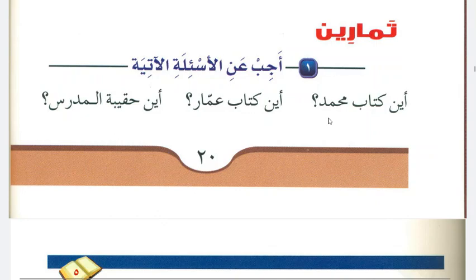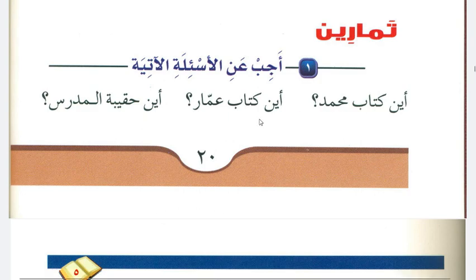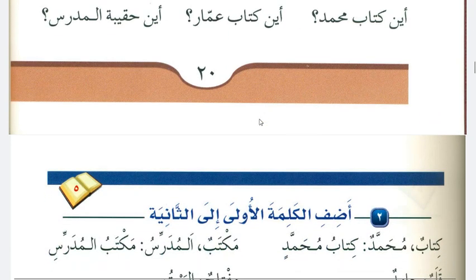For example: أين كتاب محمد؟ Where is the book of Muhammad? You can say: هو على المكتب. It is on the table. In this way you will answer these questions.